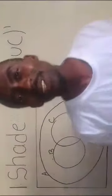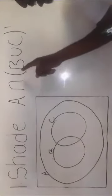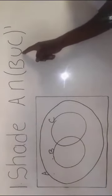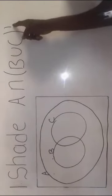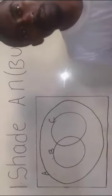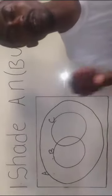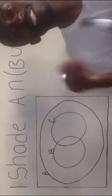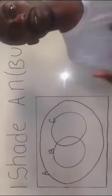We have a mathematics question that says shade A intersect B union C cross bracket complement. Here we are talking about a set. A set is a collection of well-defined objects. Those objects inside the set are called the elements.